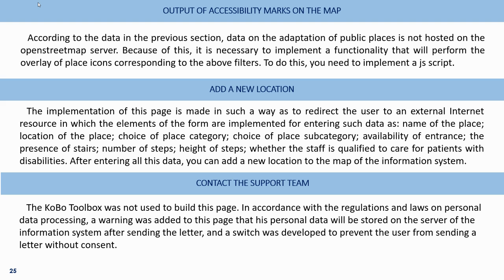Add a new location. The implementation redirects the user to an external internet resource where data is entered — including name of the place, location, choice of place subcategory, availability of entrance, presence of stairs, number of steps, height of steps, and whether staff are qualified to care for patients with disabilities. After entering all data, a new location can be added to the map. For contact support, a warning about personal data processing was added to the page, along with a consent switch to prevent the user from sending a message without agreement.